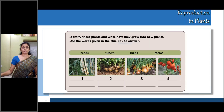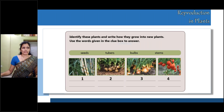See children, here is a picture. Identify these plants and write how they grow into new plants. Use the words given in the clue box to answer. Now identify these pictures. What is the first picture — observe the color and shape of the leaf and the part shown here. Coming to the second picture, have you ever seen this? It's a vegetable we eat. Identify it, guess the answer.